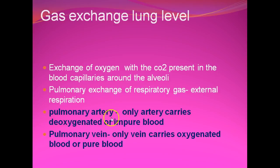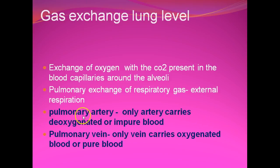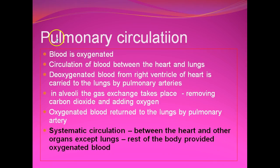Generally, arteries carry oxygenated blood to other organs, and veins carry deoxygenated blood back from the tissues. Oxygenated blood contains a higher amount of oxygen; deoxygenated blood contains a higher amount of carbon dioxide. But in the case of the pulmonary artery, it is the only artery that carries deoxygenated or impure blood — blood with a higher carbon dioxide content. The pulmonary vein is the only vein that carries oxygenated or pure blood. This circulation is called pulmonary circulation, where the blood is oxygenated.